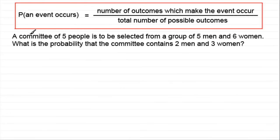We've got here: a committee of five people is to be selected from a group of five men and six women. What's the probability that the committee contains two men and three women? In order to do this I need to work out each of these values in this formula. I'm going to start with the denominator. I always think that's the easiest part to start with in questions like this.